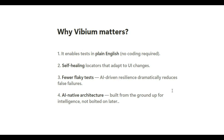Here is what the QA community is buzzing about and what Vibium is offering. First, it enables tests in plain English — no coding is required. Second, it is going to have self-healing locators, meaning locators adapt as per UI changes. Many tools offer self-healing, but let's see how Jason Huggins has solved this problem. Third, it is going to have fewer flaky tests.